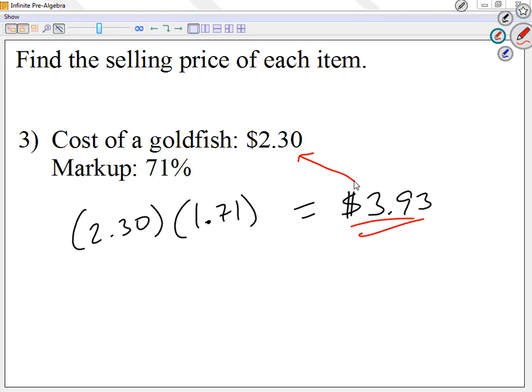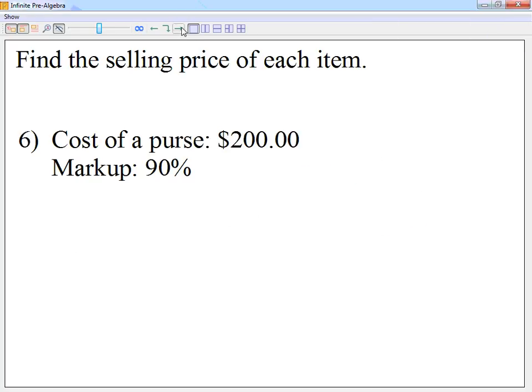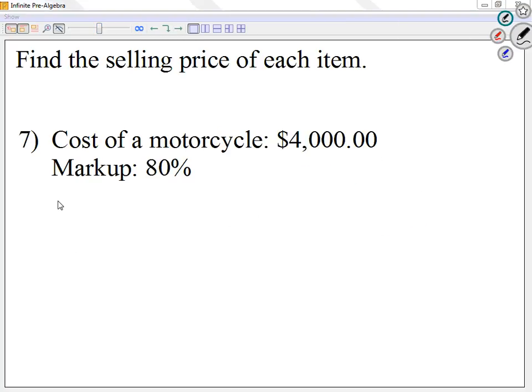If you finish with something less than, there's something wrong. Any other questions? Seven? Let's take a look at number seven. I'm going to multiply 4,000, which is the cost of a motorcycle. And I'm going to multiply this by 1.80, which is 180%. So 4,000 times 1.80 gives me 7,200.